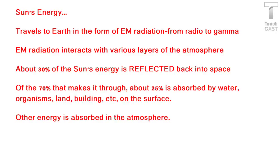Let's review about the sun's energy. The sun's energy travels to Earth in the form of electromagnetic waves, because electromagnetic waves do not require matter to travel. So radio all the way to gamma comes to us from the sun.